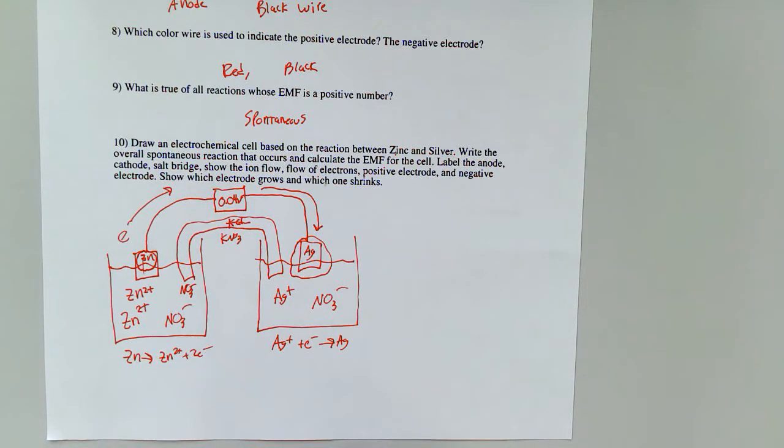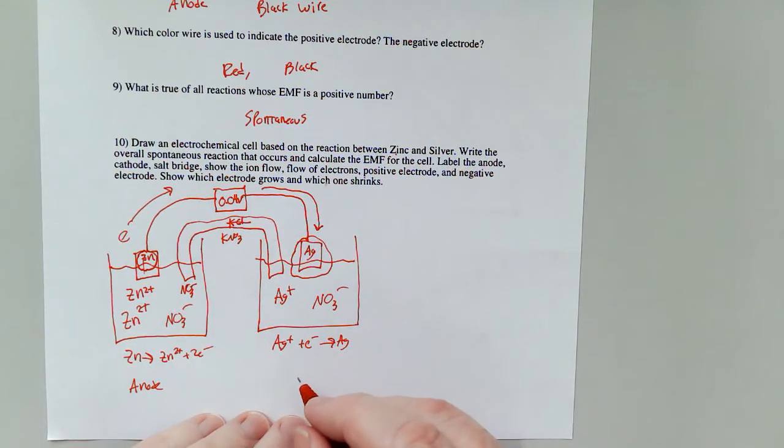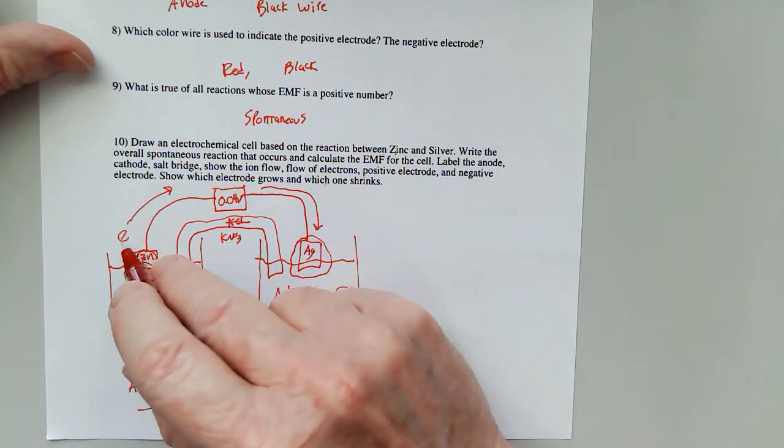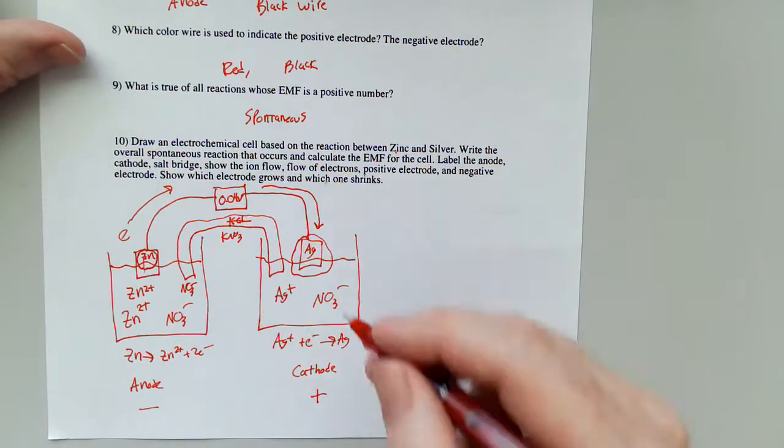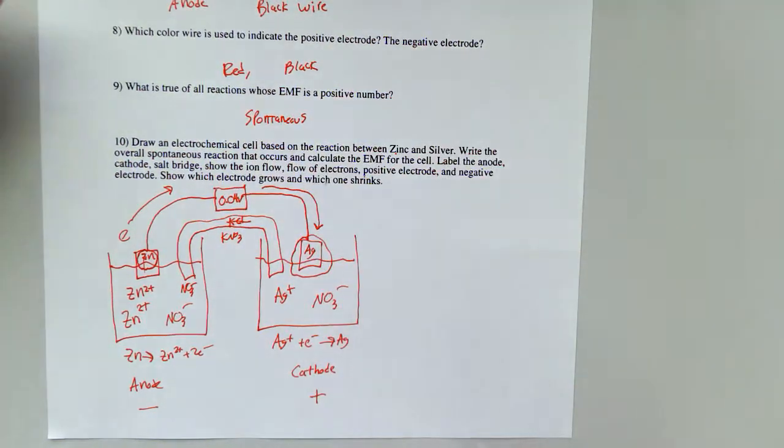Now, which side is the anode and which side is the cathode? This is oxidation, so it's the anode. This is reduction, so it's the cathode. The cathode is positive. The anode is negative. That makes sense. This is negative. It pushes the electrons away. This is positive. It attracts the electrons towards it.